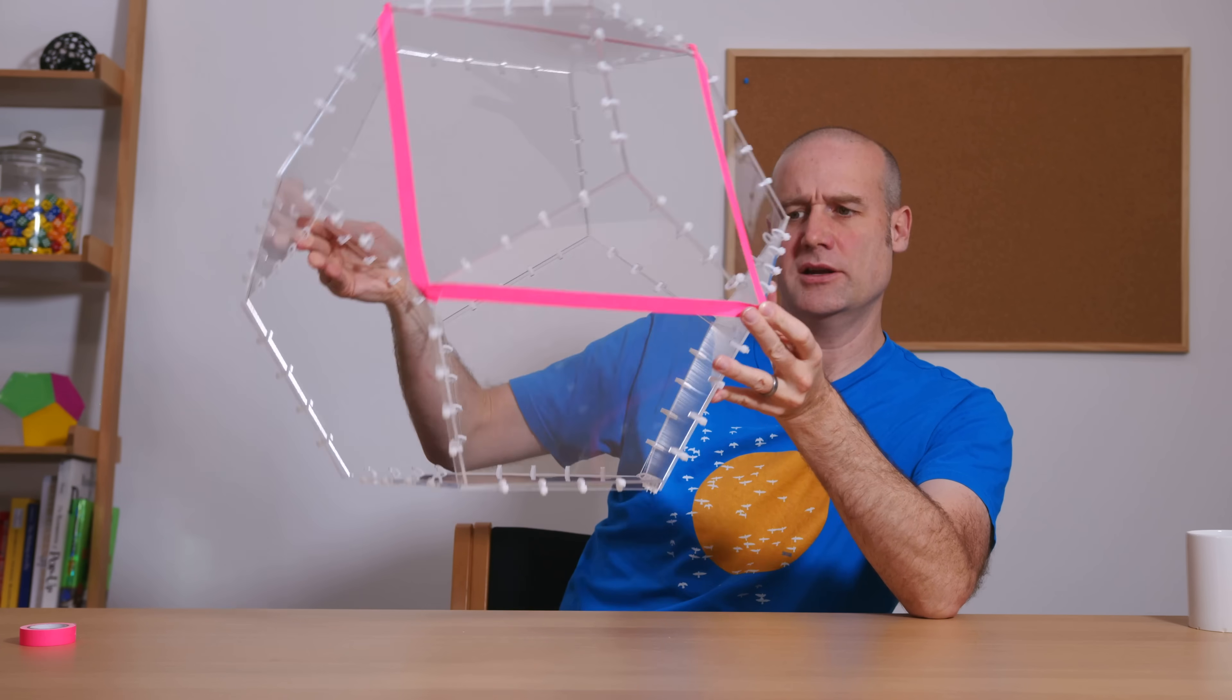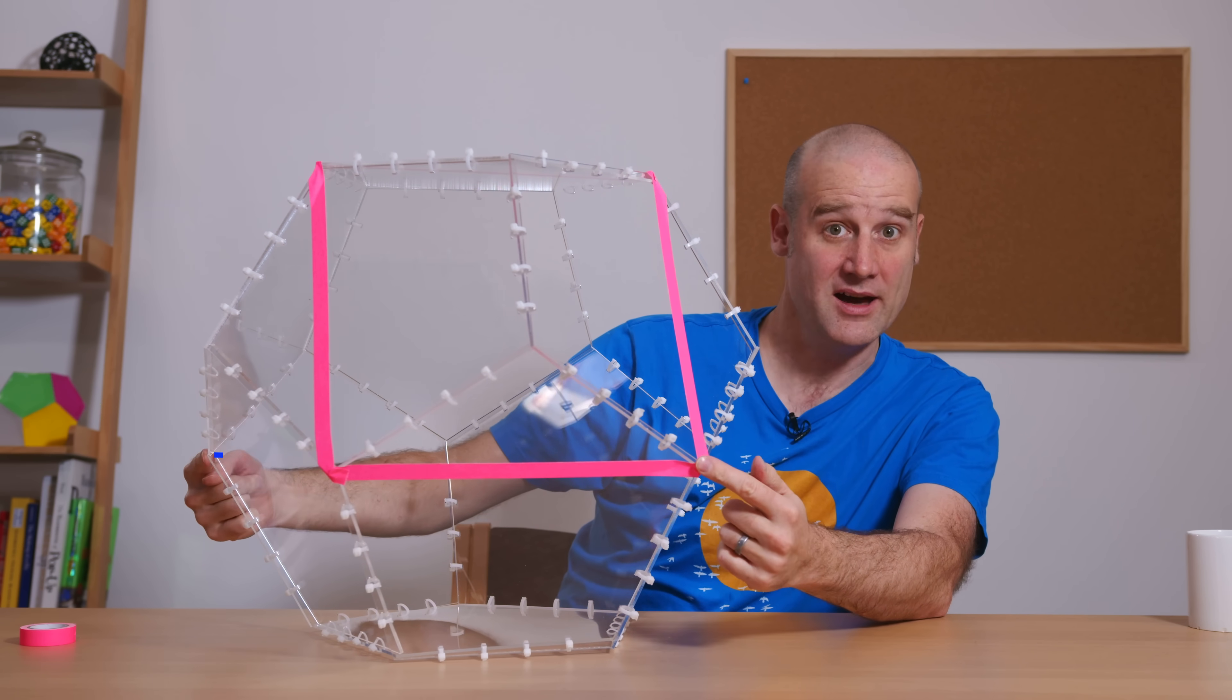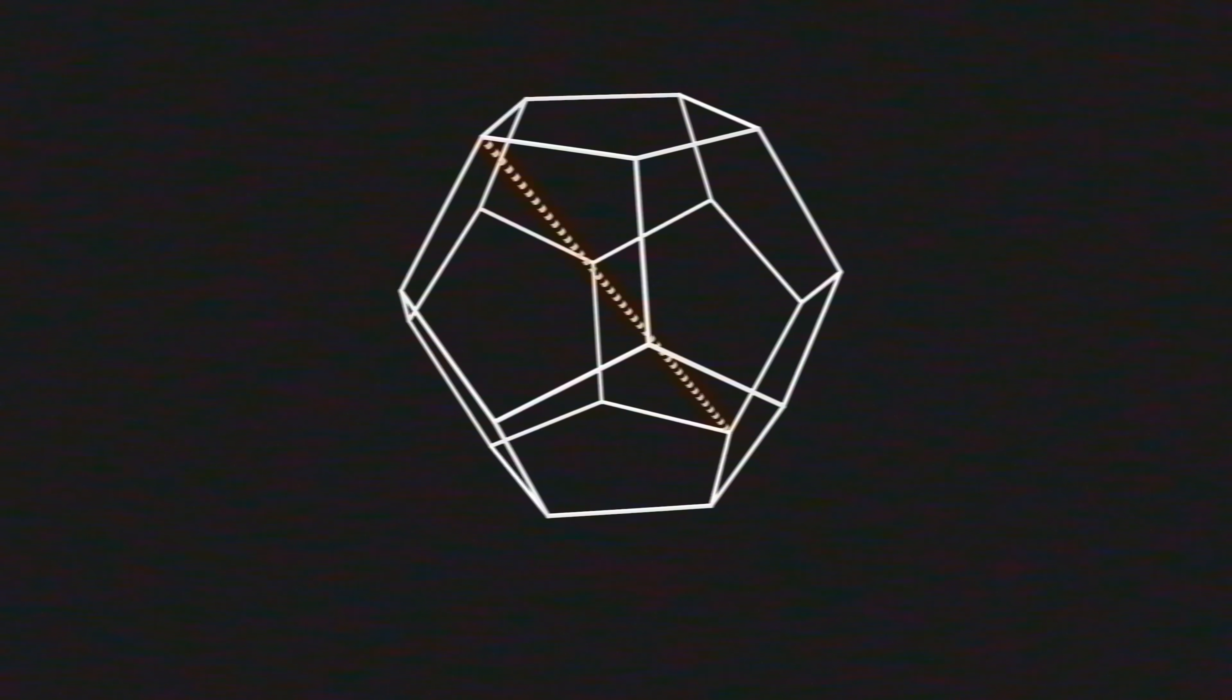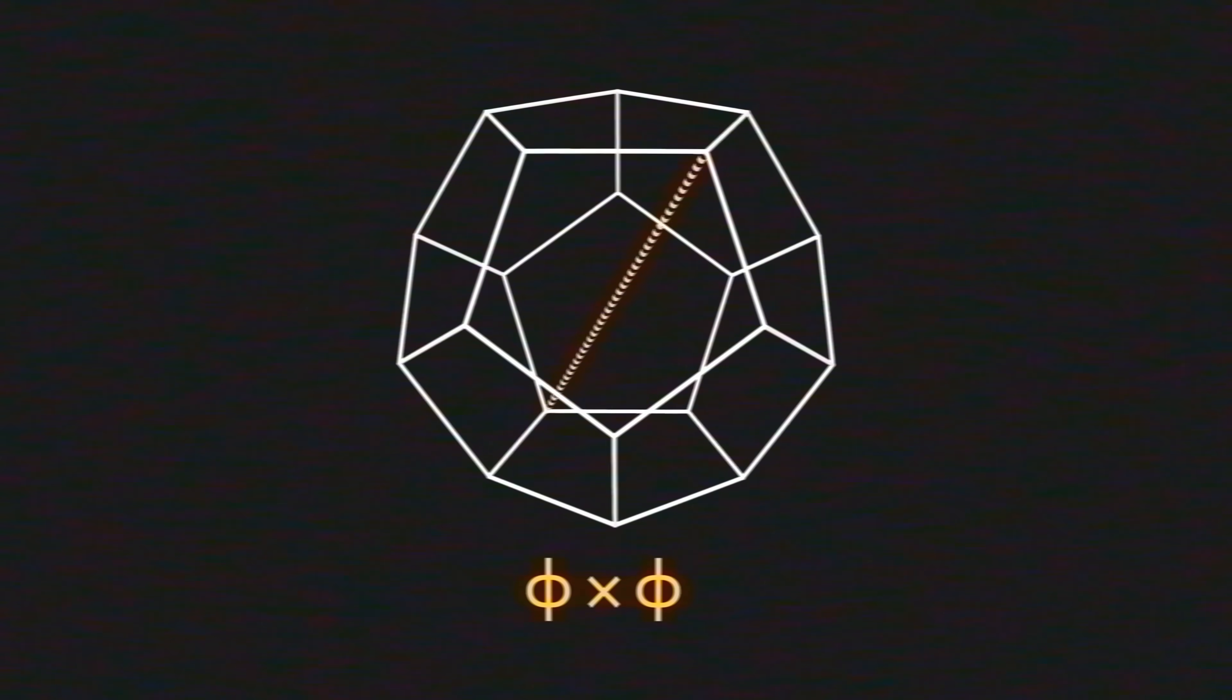Our next space diagonal, instead of just going from here across to this one, we're going to go all the way over here. And that distance is the golden ratio times the golden ratio. Oh, thank goodness. We're back. Back in Pentagon town.